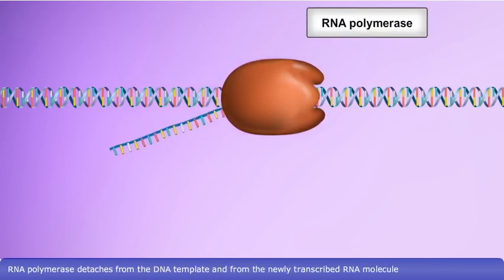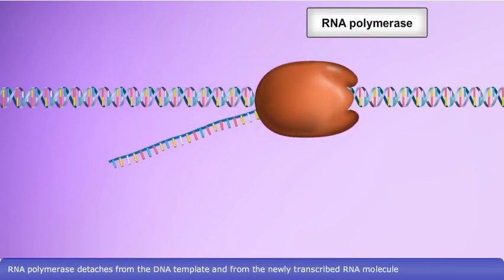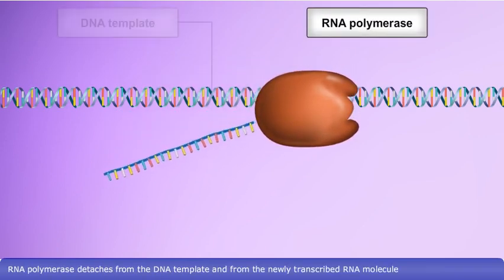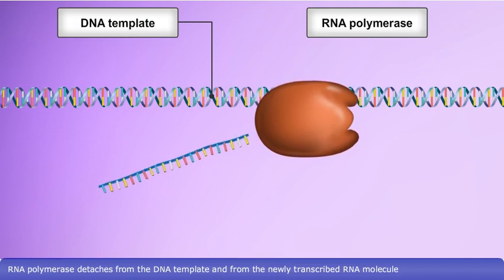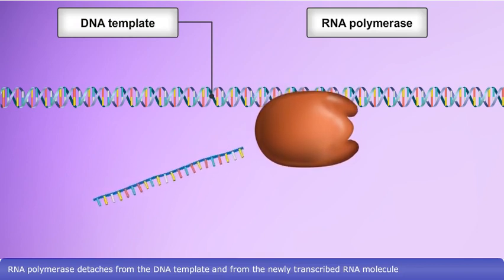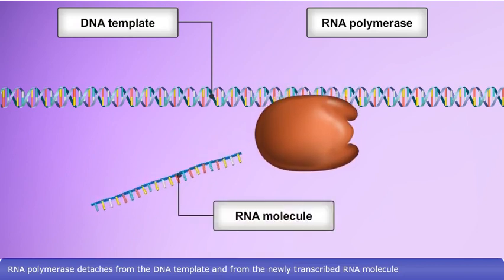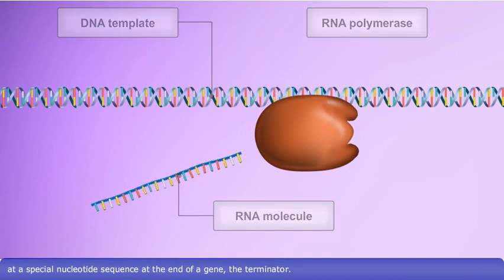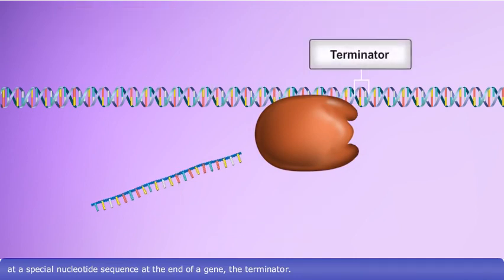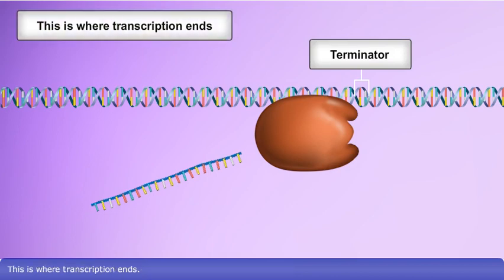RNA polymerase detaches from the DNA template and from the newly transcribed RNA molecule at a special nucleotide sequence at the end of a gene — the terminator. This is where transcription ends.